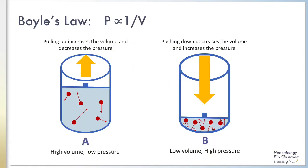Boyle's Law says that the pressure and the volume of a gas have an inverse relationship. Consider these two containers. In container A, when the plunger is pulled up, the volume increases and the pressure decreases. Conversely, when the plunger is pushed down, as in container B, the volume is decreased and the pressure is increased. This exhibits Boyle's Law, which states that pressure is inversely proportional to volume.